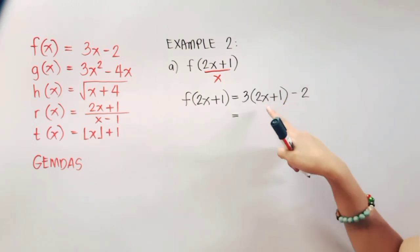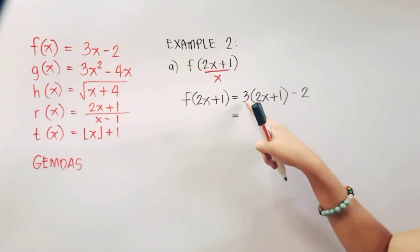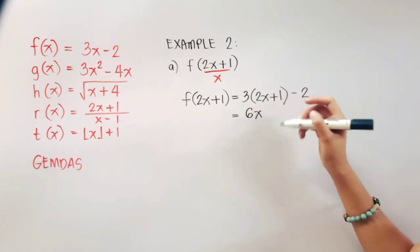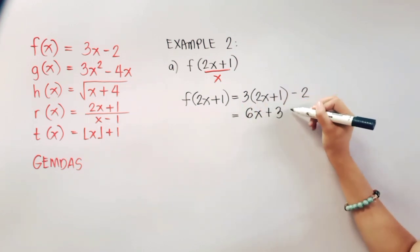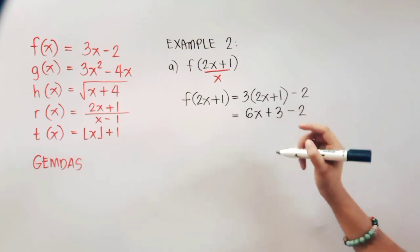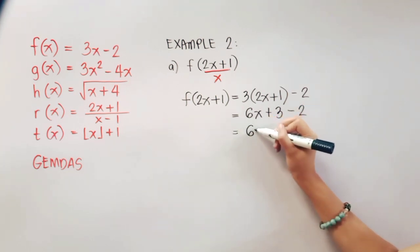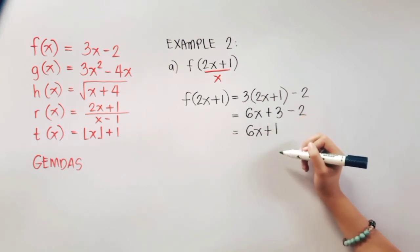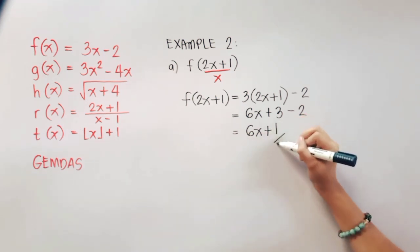Now let us distribute or multiply 3. So 3 times 2x is 6x, and then 3 times 1 is positive 3. Copy minus 2. So that is 6x, 3 minus 2 is positive 1. Therefore this is our final answer.